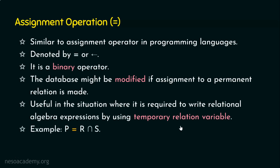For example, consider P ← R ∩ S. Intersection is one of the additional relational algebra operators — a binary operator taking two inputs R and S. The output of R ∩ S is a relation, which is a temporary relation, and we are storing that output in a relation variable P. P is a temporary relation variable, which is exactly what the previous point described.